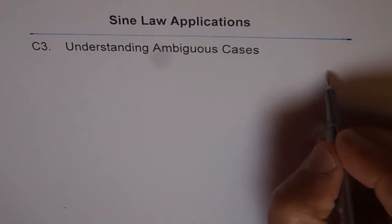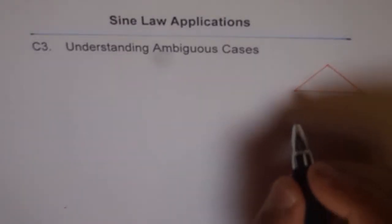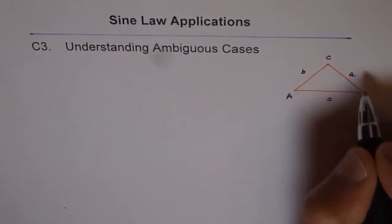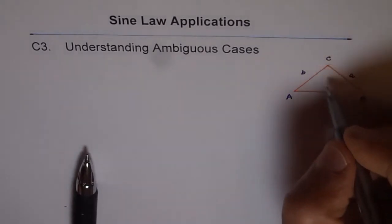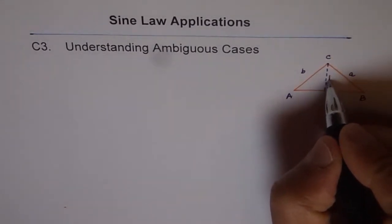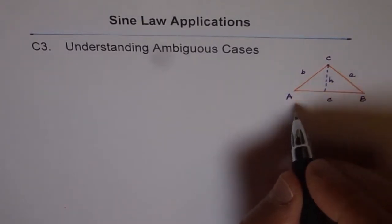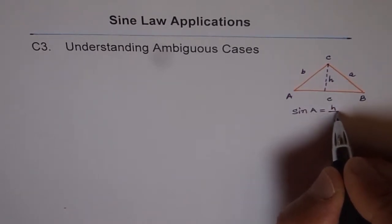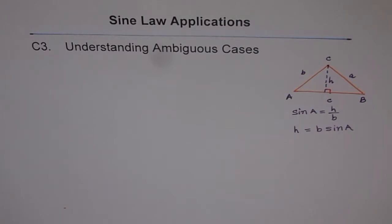Let's consider a general triangle ABC, with sides labeled A, B, and C. The side opposite angle A is small a, and we drop a perpendicular from C to AB, giving us height H. In this triangle, sine of A equals H over B, so H equals B times sine of A.